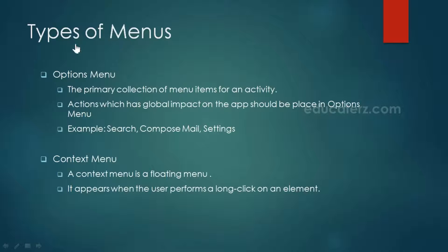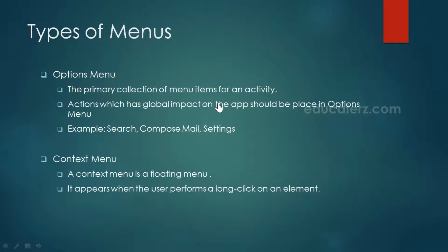Now let us see what are the different types of menus available. We have options menu, context menu, and also popup menu, but here we will discuss about options menu and context menu. Options menu is the primary collection of menu items for an activity, where actions that have a global impact on the application must be placed.